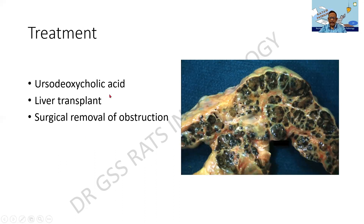Treatment can be medical in the early stages with ursodeoxycholic acid, and liver transplantation can be the ultimate option. In the case of secondary biliary cirrhosis, surgical removal of the obstruction can be attempted.